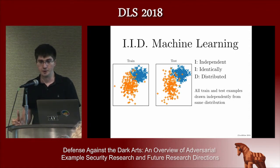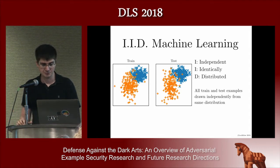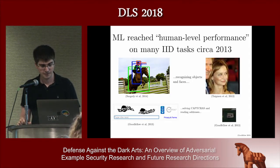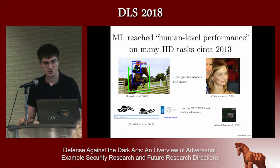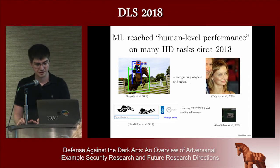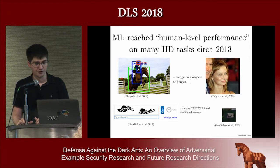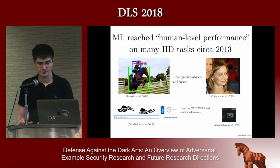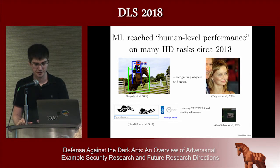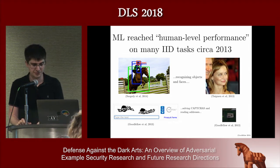There are ways to generalize both in theory and in practice from the train distribution to the test set. Recently, machine learning more or less solved this task in several different application areas, reaching human-level performance on IID test data in about 2013.